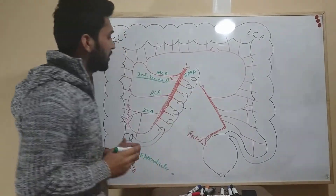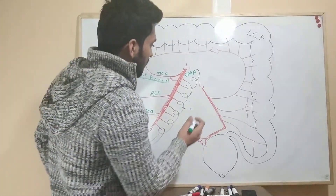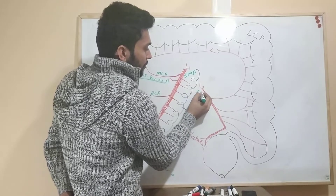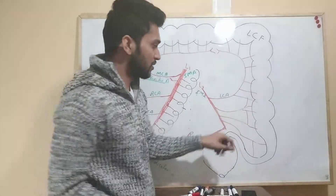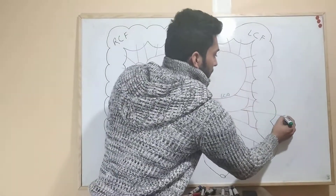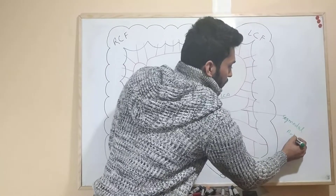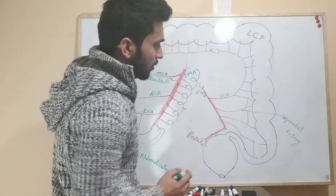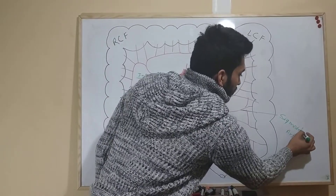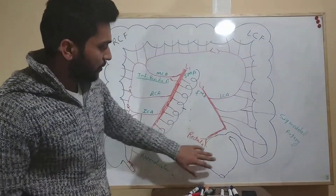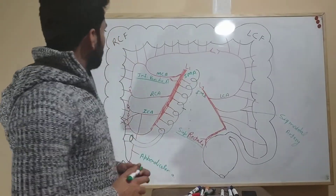The inferior pancreaticoduodenal artery gives blood supply to the pancreas and duodenum. For the inferior mesenteric artery: the first branch is the left colic artery, the next branches are the sigmoidal arteries, and the third branch is the superior rectal artery.